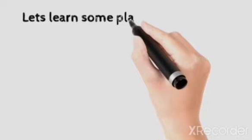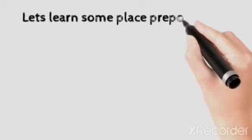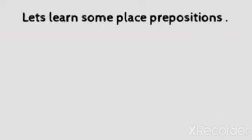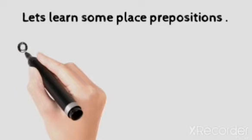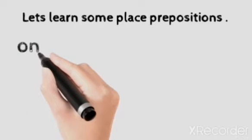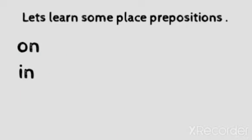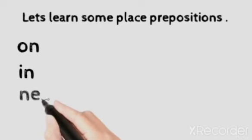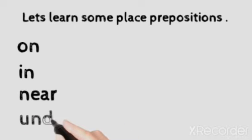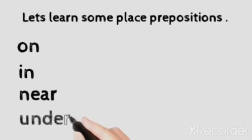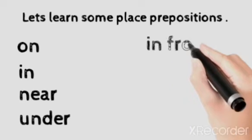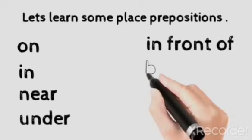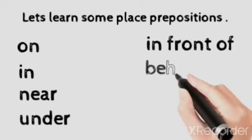Today we are going to learn about some place prepositions. The first one is 'on', the second one is 'in', the third one is 'near', the fourth one is 'under', the fifth one is 'in front of', and the last one is 'behind'.